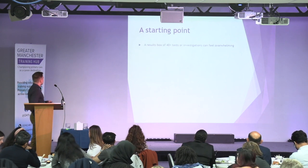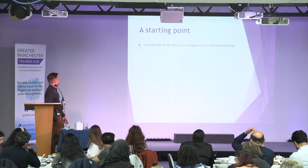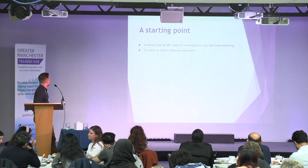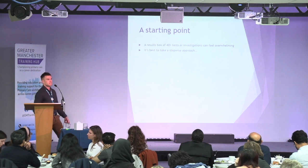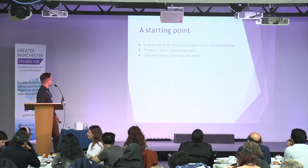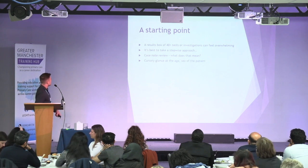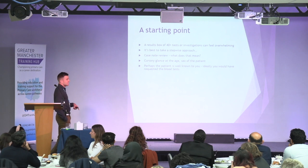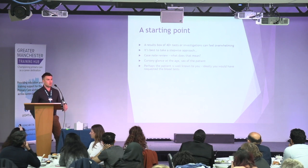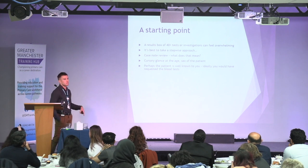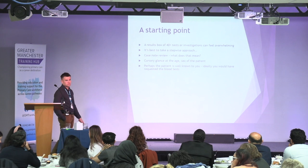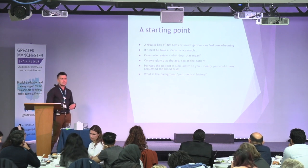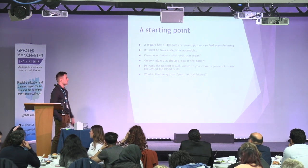It can often feel quite overwhelming when you're presented with a results box that's got potentially over 40 results in and you're thinking, how am I going to get through these safely? I try to remind myself of a stepwise approach. First of all, I always think of it as a case note review. A cursory glance at the age and the sex of the patient first and foremost. Perhaps the patient's well known to you and ideally you will have requested those blood tests, but in primary care with shortages of staff, it's not always the case and you may be presented with blood tests that you've not requested yourself. What's the background and the past medical history of the patient?